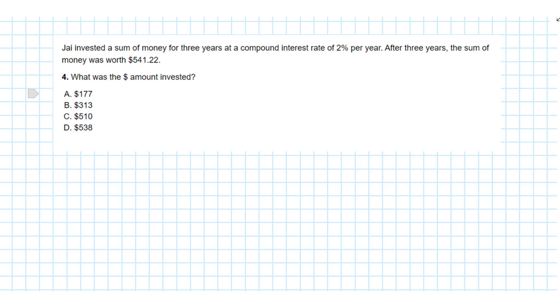We have an investor who invested an unknown sum of money for three years - the number of years is very critical when we're working with the time value of money - at a compound interest rate of 2% per year. After three years, the sum of money was worth $541.22. Now here's our question: What was the dollar amount invested?